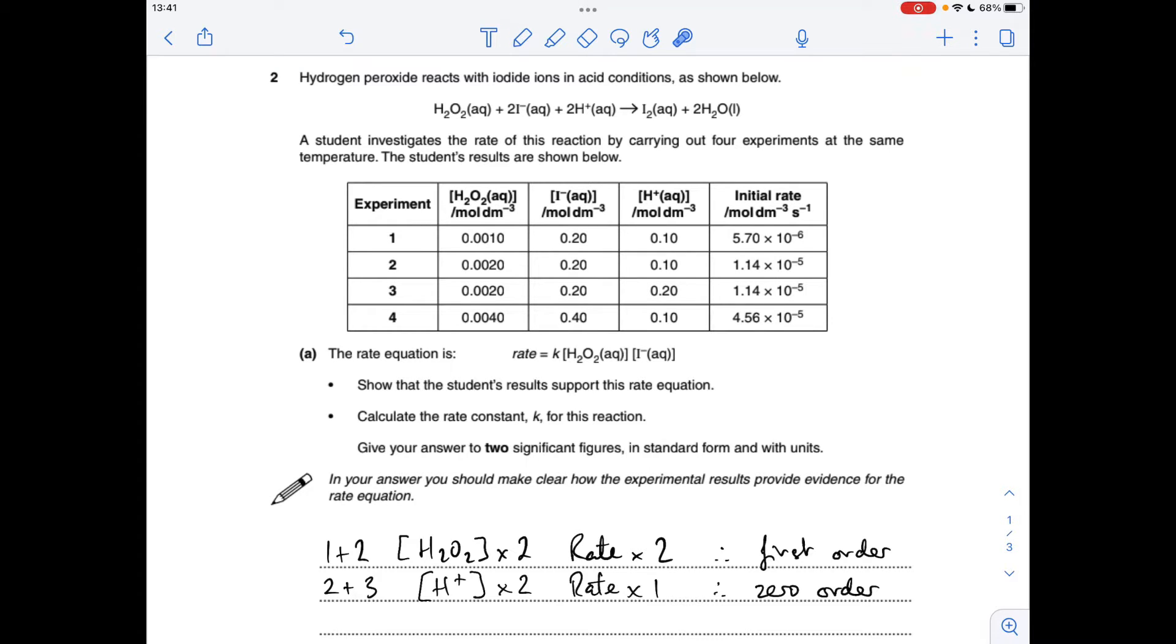And then to get the remaining one, so the I-, I'm going to use 2 and 4. I've chosen those two because the H+ concentration's constant. It's 0 order anyway, so it doesn't really matter. But anyway, let's go for this. So using 2 and 4, the H2O2 concentration's doubled, and so has the I- concentration.